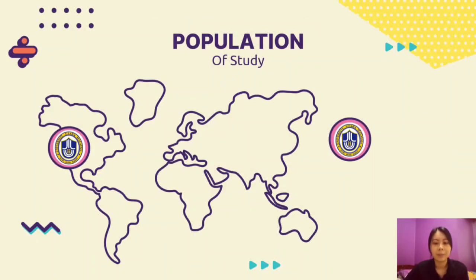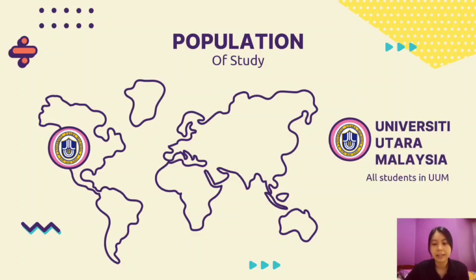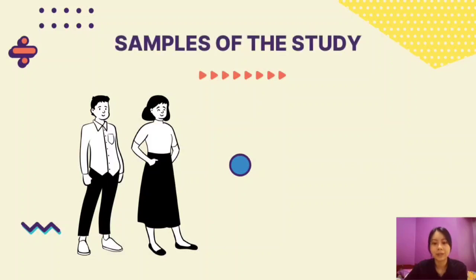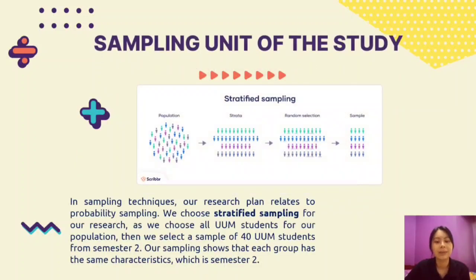Our population of studies is Universiti Utara Malaysia, involving all students of UUM. The sample of studies is 40 students in Semester 2 of UUM. For the sampling unit, our research plan relates to probability sampling, and we chose stratified sampling since we selected all UUM students as our population. We then selected a sample of 40 UUM students from Semester 2, where each group shares the same characteristic — being in Semester 2.